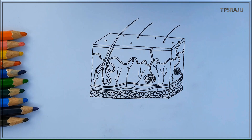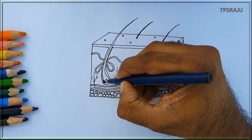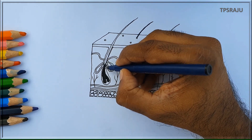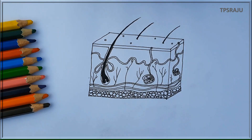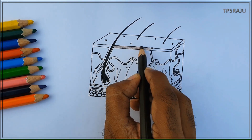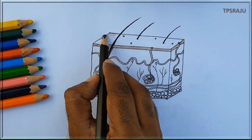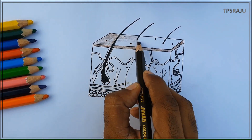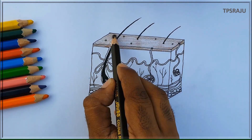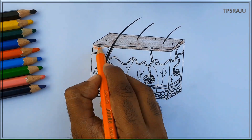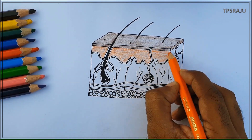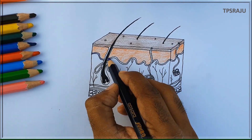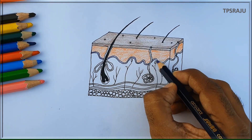If we apply the colors, it will become more beautiful. Let us apply the colors. Applying black color to hair follicle and hair. Brown color to stratum corneum. Orange color to granular layer. Violet color to Malpighian layer.